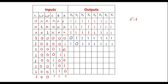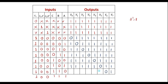When CBA = 100, Y4 line goes low and all other lines are high. When CBA = 101, Y5 line goes low and all other lines are high. When CBA = 110, Y6 line goes low and all other lines are high. When CBA = 111, Y7 line goes low and all other lines are high.